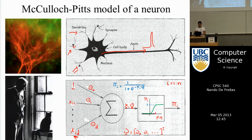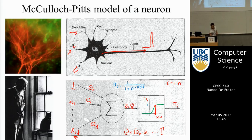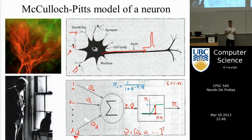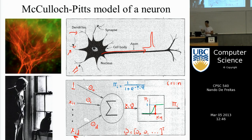Depending on what that input is — the level of firing of the cell — the cell will have this non-linearity, which is given by a function that looks like an S. Because it looks like an S, it's also called a sigmoid function, or the logistic function. If the level of excitation x times theta is above a certain threshold, the neuron is on — we're on the top part of the green function. If it's below a certain threshold, the neuron is off.